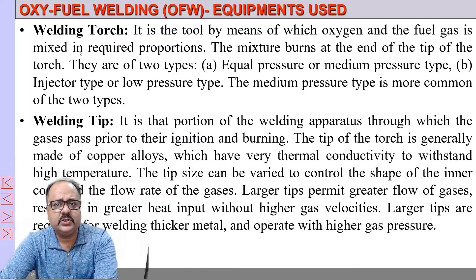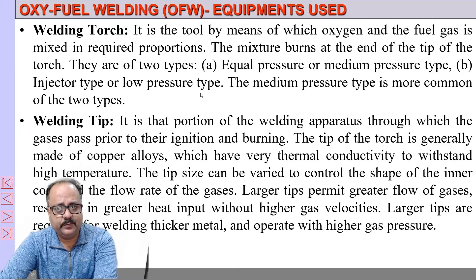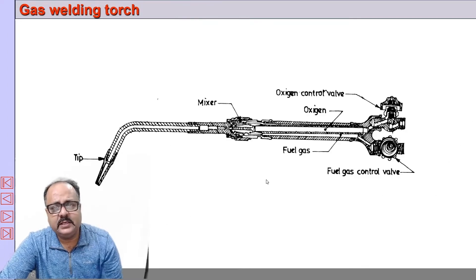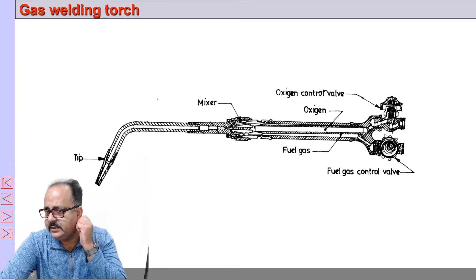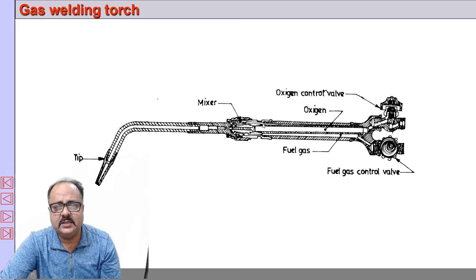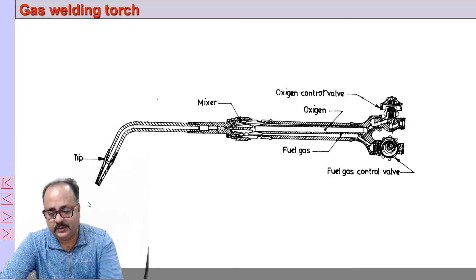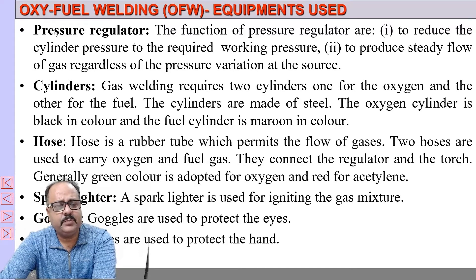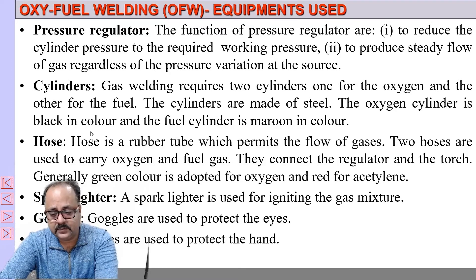We have a welding torch, which can be of two types: equal pressure or medium pressure type, and injector type or low pressure type. We also have a special welding tip for oxy-fuel welding, which we will discuss in a later slide. The oxygen valve and the fuel gas valve allow you to control the amount of fuel gas and oxygen that mix and come out through the tip. We also have pressure regulators, cylinders for both fuel and oxygen, hoses, spark lighters, goggles, and gloves, which are important.